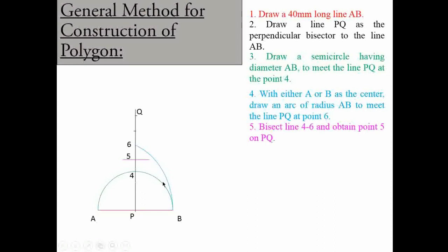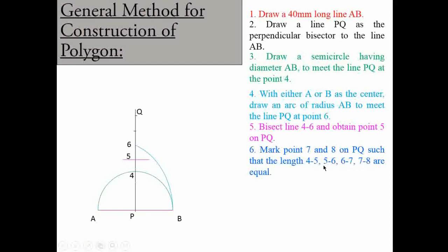The next step is to mark points 7 and 8 on PQ such that the lengths 4 to 5, 5 to 6, 6 to 7, and 7 to 8 are all equal. Since 4 to 5 and 5 to 6 are the same length, we take that distance in the compass and, using point 6 as center, mark point 7; then using point 7 as center, mark point 8 at the same distance.